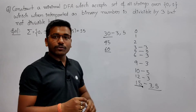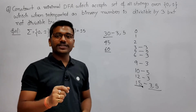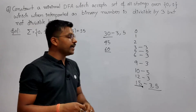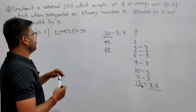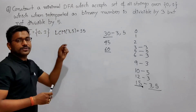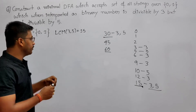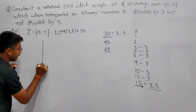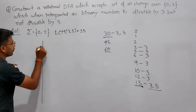So the transitions will look the same — the only change is going to be in the final states. Like Q0 is not going to be the final state. If you construct a minimal DFA for that, let's see how it will look.